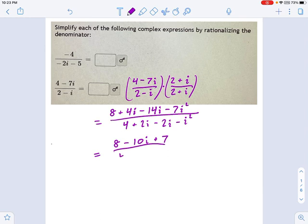And then on the bottom, we have 4. 2i minus 2i cancels out. And then minus i squared is just plus 1. So we keep on simplifying this. And we get 15 minus 10i on the top. And then 5 on the bottom. Which we could simplify even more if we want to.